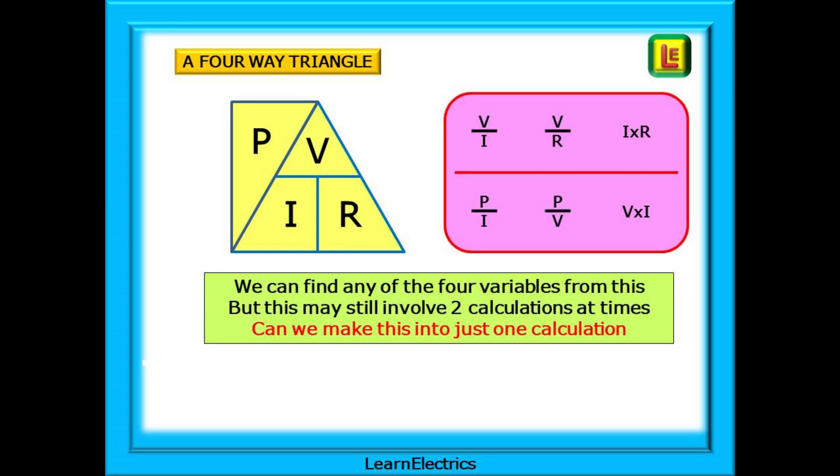By using the four-way triangle, we can find the six calculations that will help us to find any of the four variables: power, voltage, current, and resistance. This is great, but still involves two calculations at times, so can we find a way to determine any variable with just one calculation?